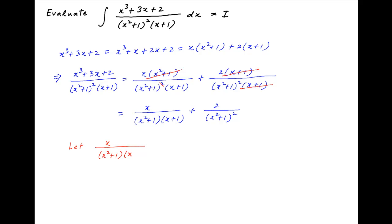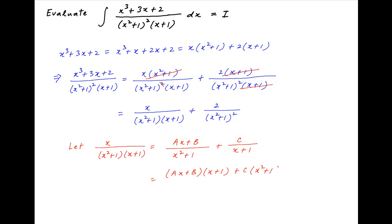Now let's resolve the first term into partial fractions. Assume that x over [(x squared plus 1)(x plus 1)] equals (ax plus b) over (x squared plus 1) plus c over (x plus 1), where a, b, and c are unknowns to be determined. The right-hand side can be written as [(ax plus b)(x plus 1) plus c(x squared plus 1)] divided by [(x squared plus 1)(x plus 1)].